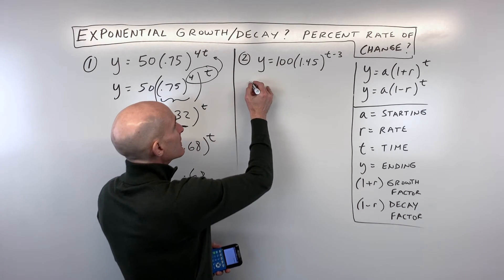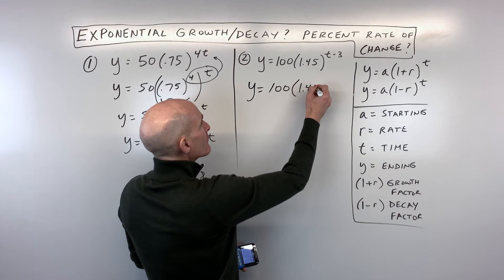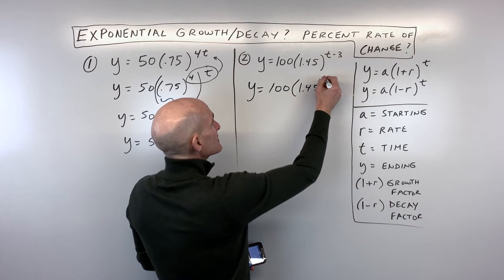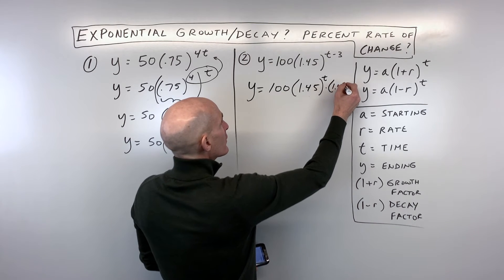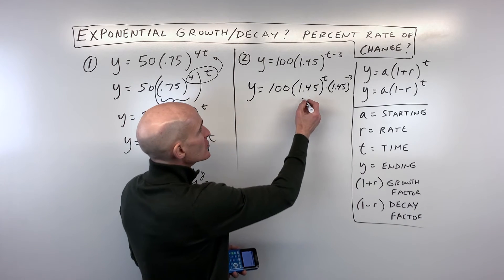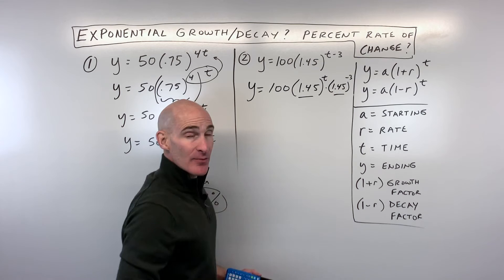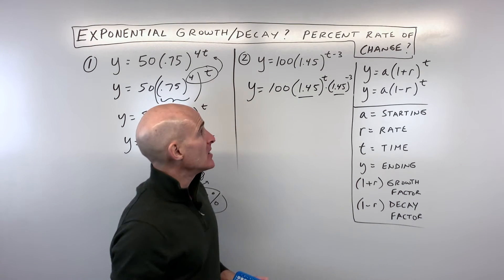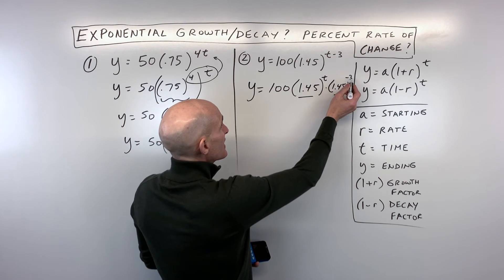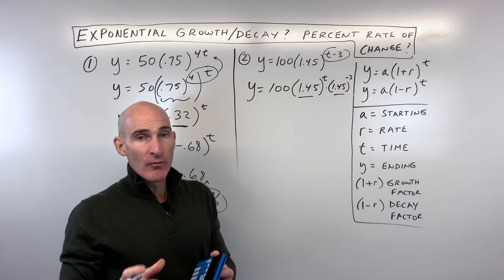Well what I'm going to do is, again using the rules of exponents, 1.45 to the t times 1.45 to the negative third, because remember with the rules of exponents, when you're multiplying and the bases are the same, what do you do to the exponents? You add them, right? So in this case it's t plus negative 3, which is the same as t minus 3. So we just rewrote it a little bit.